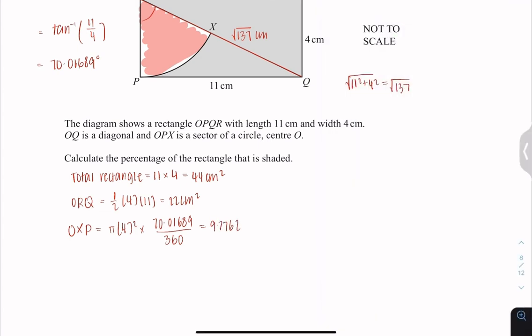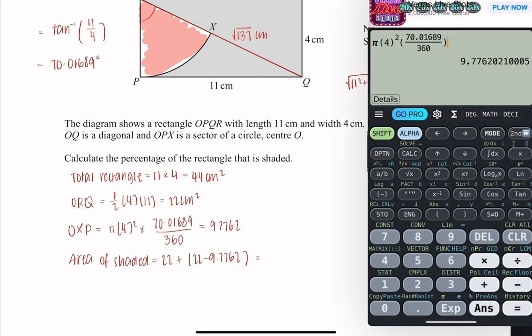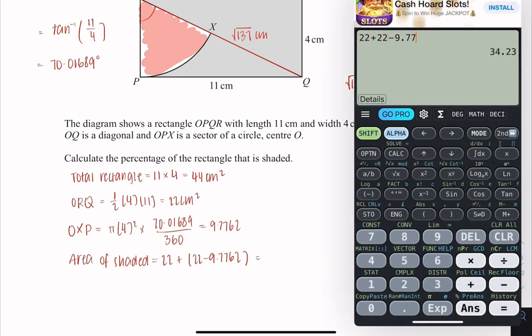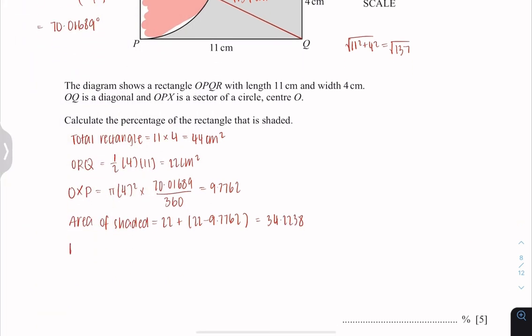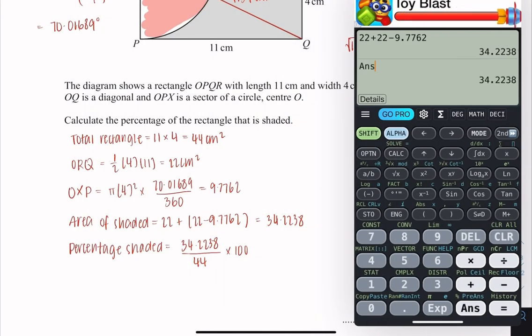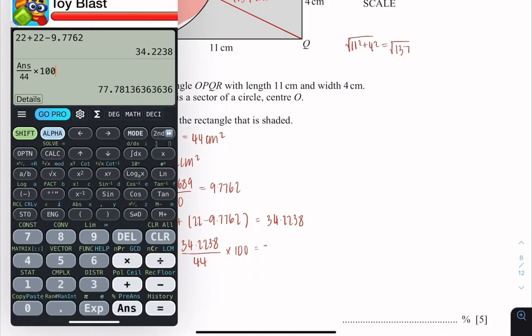And that's giving me 9.7762. So the area of shaded region is just 22 plus 22 minus 9.7762, and that gives me 34.2238. To calculate the percentage of the rectangle that is shaded, that would be 34.2238 over 44, multiply with 100, which is 77.78, which is 77.8% rounded to 3 significant figures. And that's all for part 3.